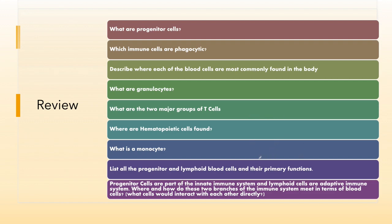Make sure you know the two classes of progenitor cells and the final cell types that result from myeloid and lymphoid progenitors. Know which ones are phagocytic, where each type is most commonly found, what granulocytes are, the primary functions of lymphoid cells, and what happens to a monocyte during maturation. This was part three — the cells of the immune system. See you in part four.